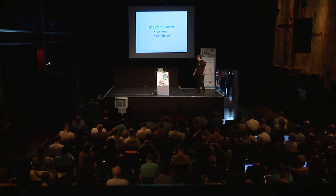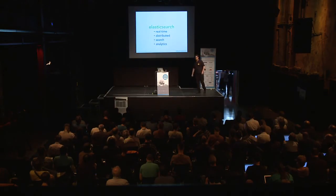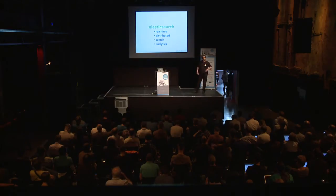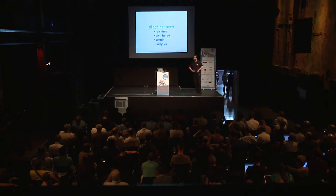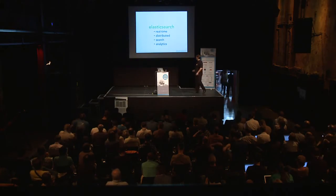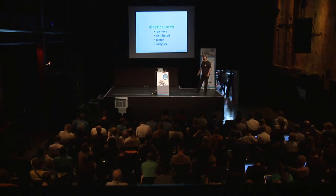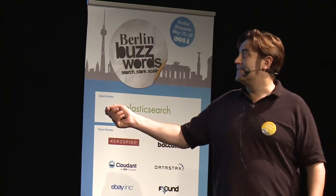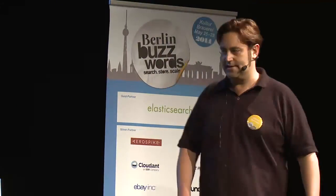Elasticsearch is a real-time distributed search and analytics engine. It does search, which is what Lucene does, but it handles full text and structured values like numbers, dates, geolocations, et cetera, as well. It can perform analytics on those values. It does this all in real-time, and it's distributed, so it can scale out horizontally and support a huge amount of data.